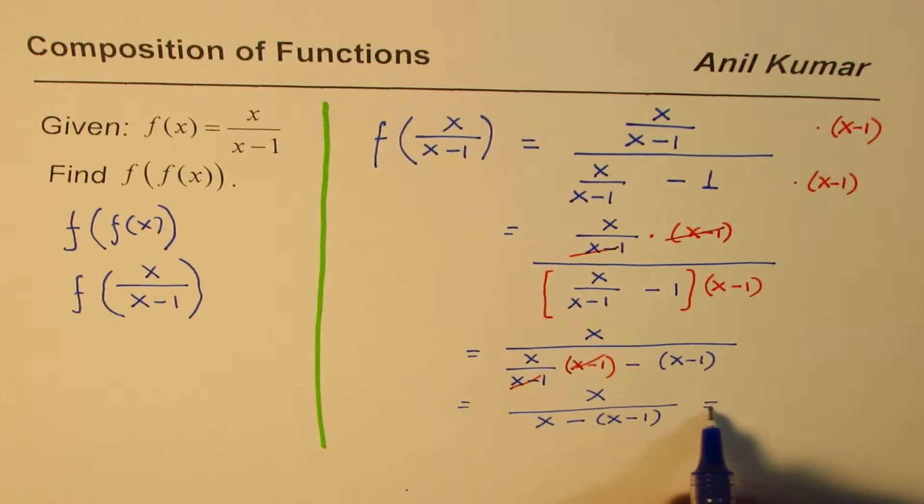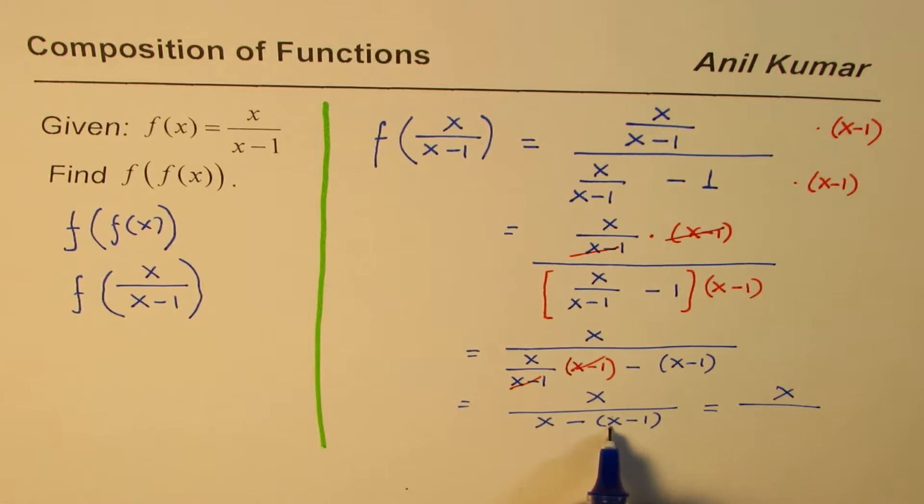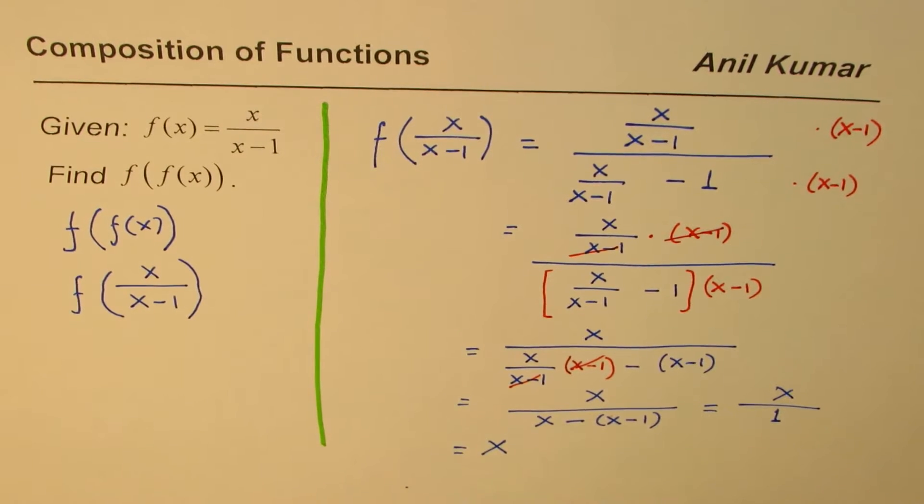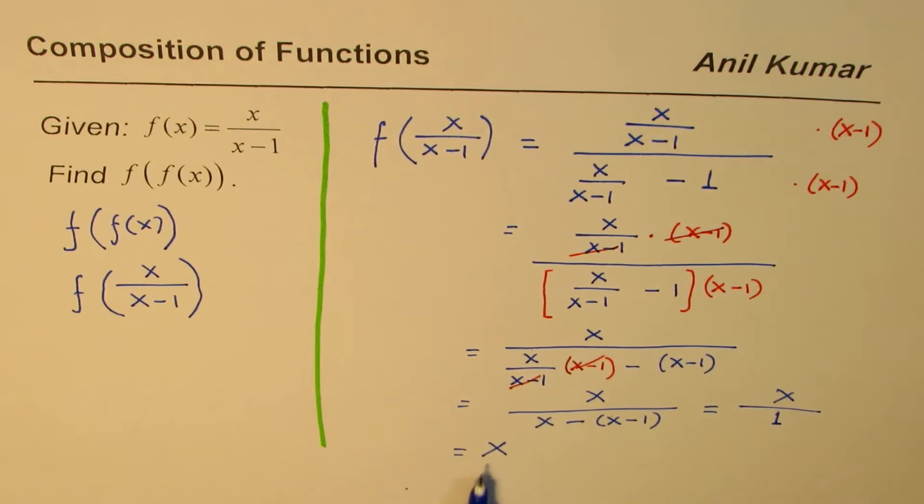Now what is this equal to? x in the numerator, x minus x is 0, minus minus 1 is 1. So we get this as equals to x. So composition of this function by itself results into x.